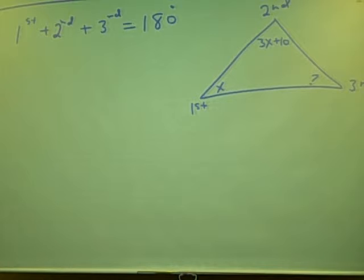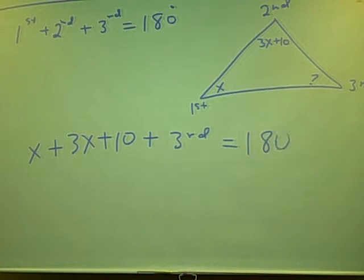So, we take the first angle plus the second angle, 3x plus 10, plus we don't know what the third angle is, so we'll just call it third, equals 180. So we're trying to figure out what the third angle is in terms of x. So now we solve, right? x plus 3x, what's that going to be? 4x. 4x plus 10 plus our third angle equals 180.